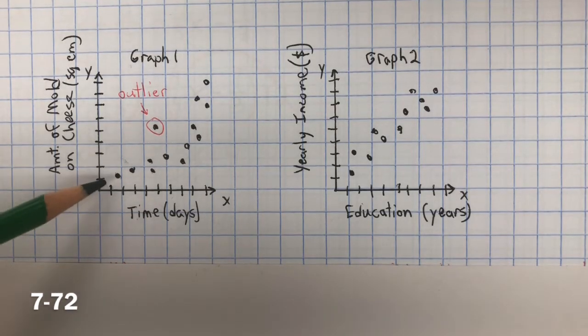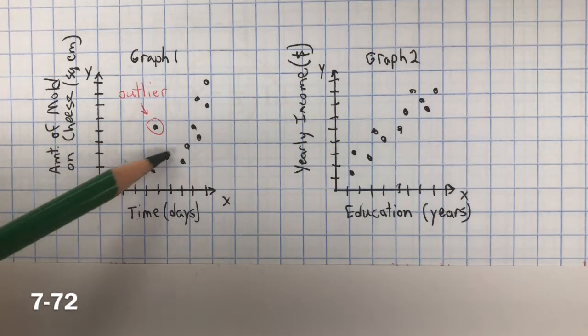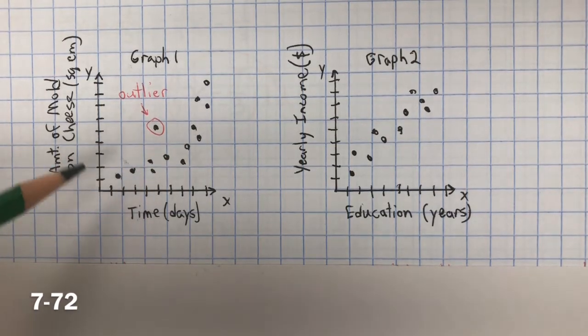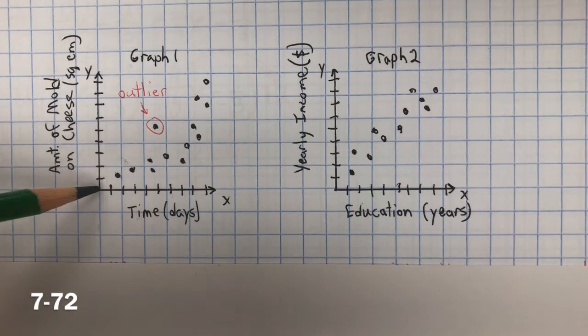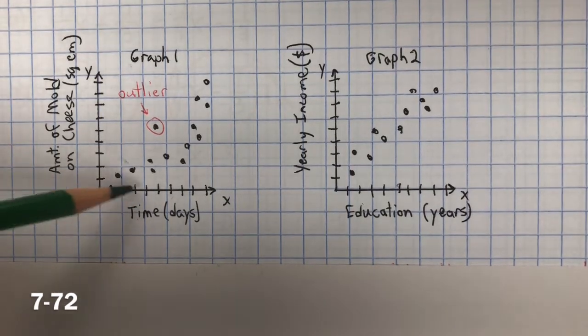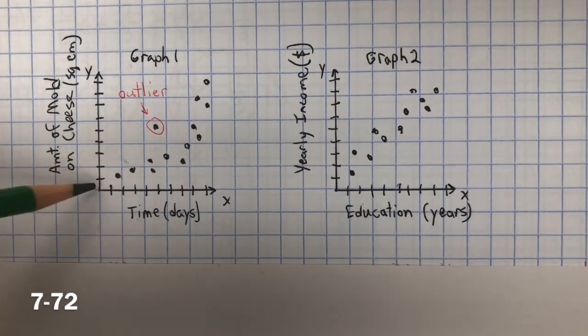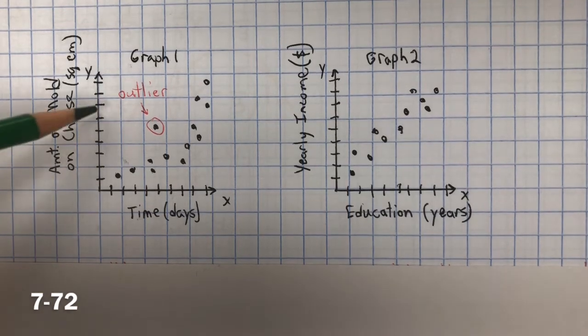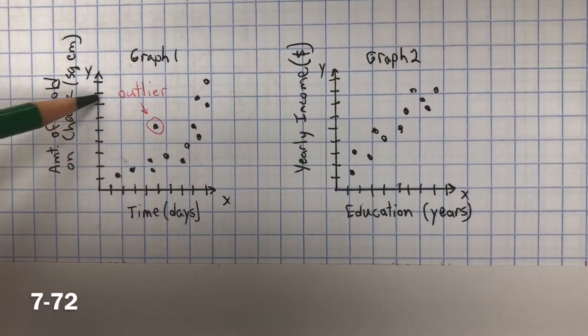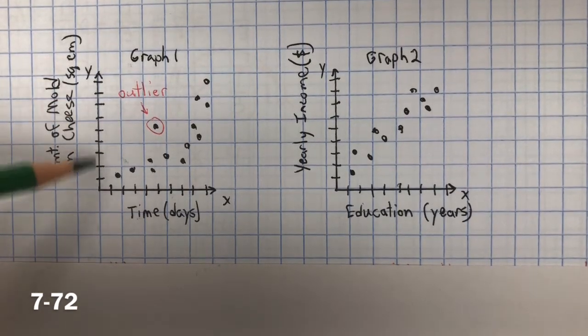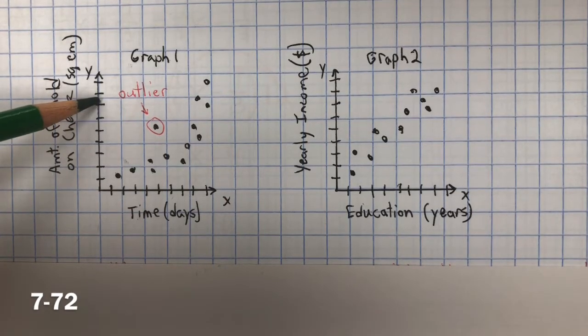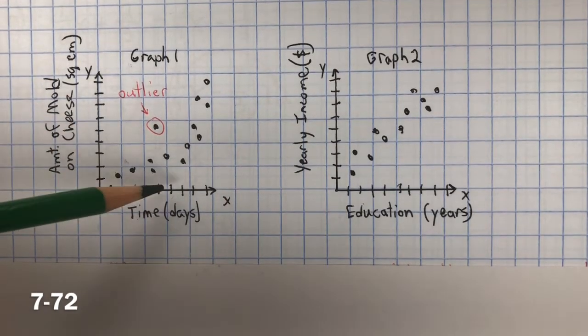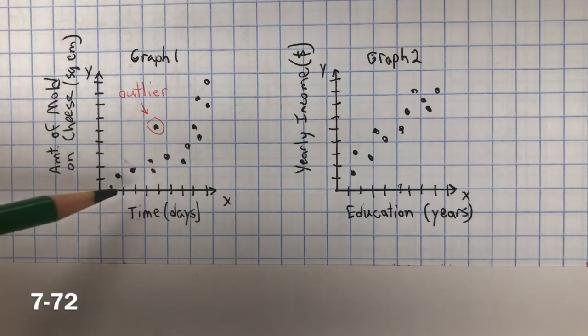In this first graph, you can see that there is a positive association. As the time increases, so does the amount of mold on the cheese. They're both increasing. The amount of cheese mold is increasing as the time is increasing.